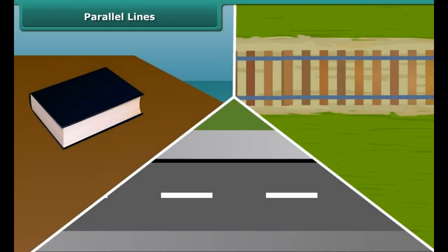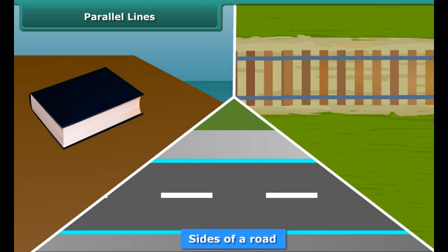Here, two lines L and M do not intersect. So, they are parallel lines. A few examples of parallel lines from daily life includes sides of a road, tracks of railway lines, and edges of a book.